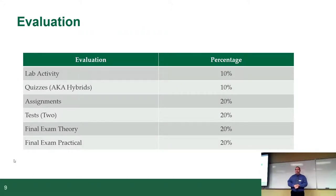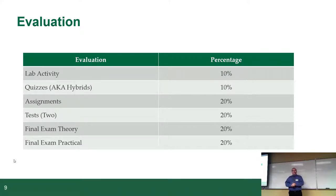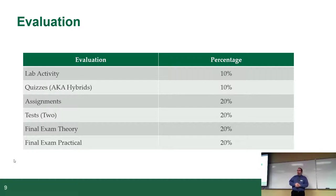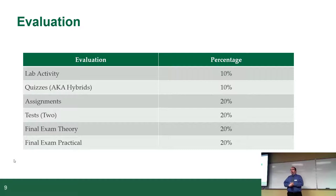Here's the evaluation breakdown. Labs are 10% — each lab is worth exactly 1% of your grade. It sounds small, but I've had students where that 1% made the difference between a pass and a fail, or between an A and an A+. Quizzes — also known as hybrids — are also 10%. I've cut one this term so there are only nine hybrids. The first three take about half an hour and are an easy 3% of your grade. The three in the middle are quite challenging, but you have all term to do them.